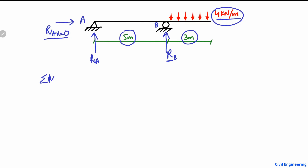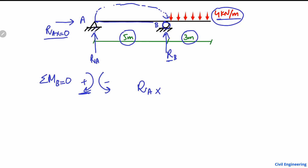To find the support reactions, we apply the equilibrium condition: summation of moments at any point equals zero. We take moments about point B, at the roller support. Clockwise moments are assumed positive and counterclockwise negative. The reaction RA acts upward at A, which creates a clockwise moment about B, so it is positive: RA multiplied by its moment arm of 5 meters (the distance from A to B).